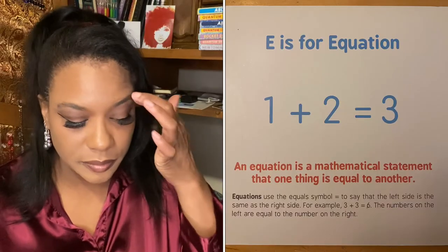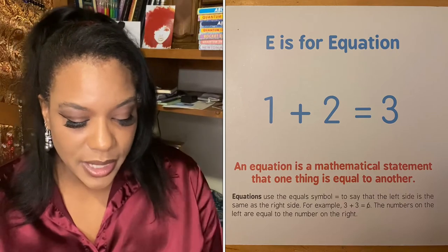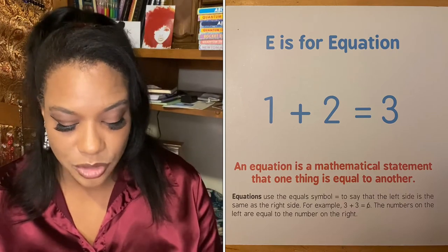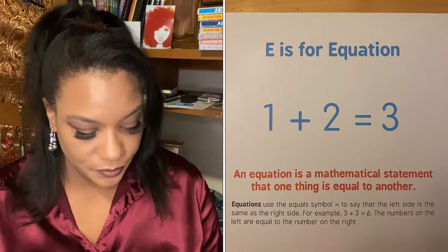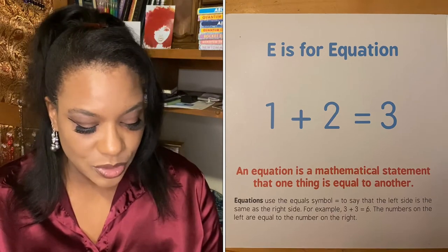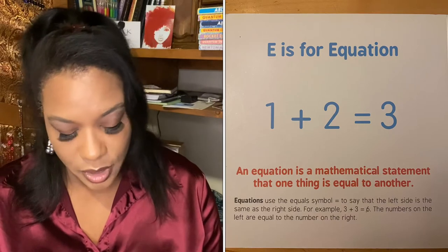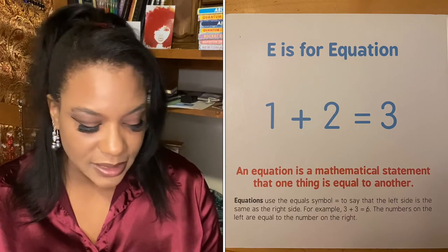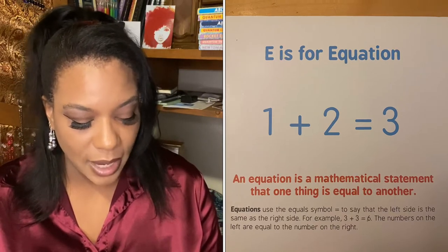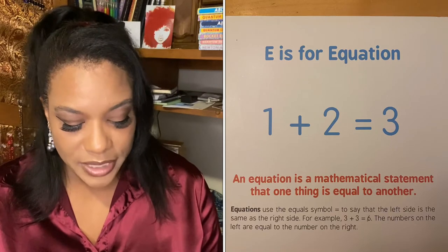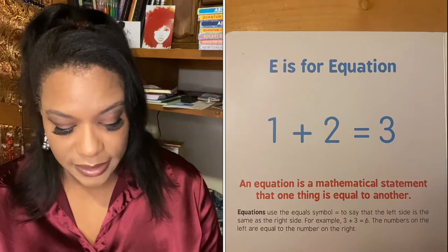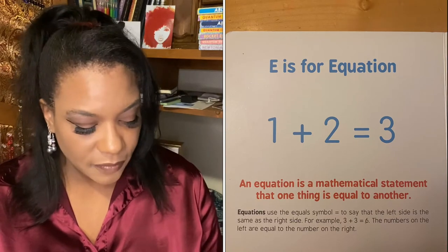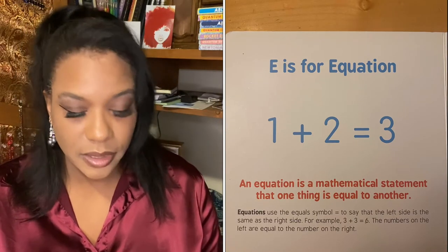E is for equation. An equation is a mathematical statement that one thing is equal to another. Equations use the equals symbol to say that the left side is the same as the right side. For example, three plus three equals six. The numbers on the left are equal to the numbers on the right.